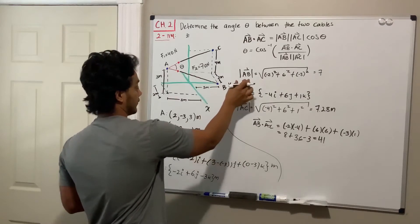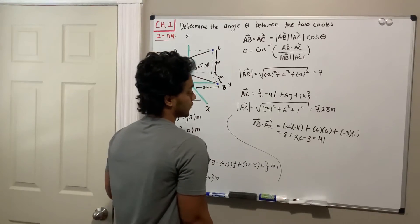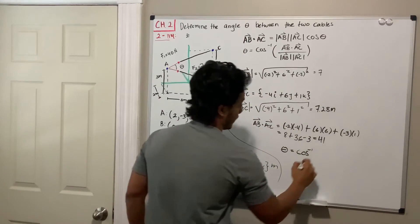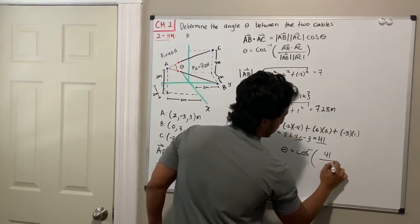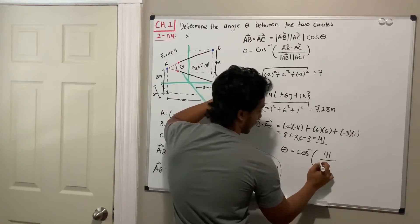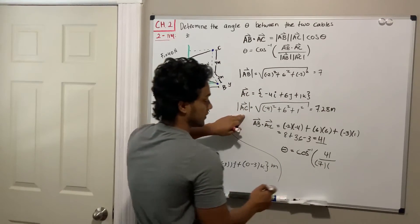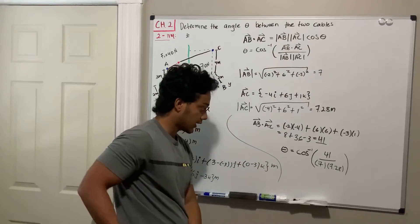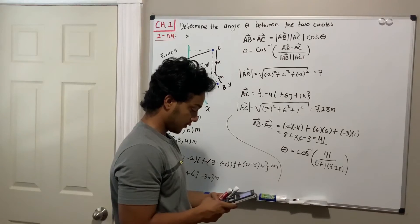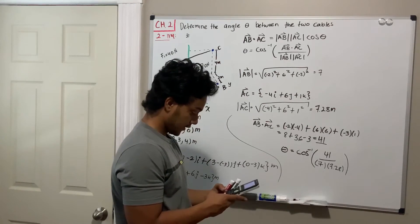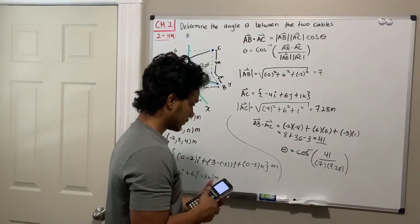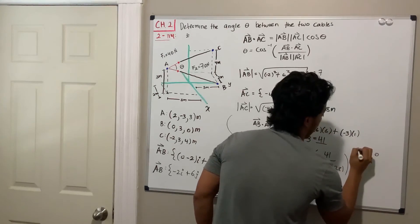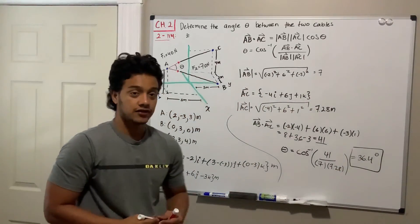Now we have everything to plug into the formula. Theta equals the inverse cosine of the dot product (41) divided by the magnitude of AB (7) times the magnitude of AC (7.28). So theta = arccos(41 / (7 × 7.28)) = 36.4 degrees. That is our answer.